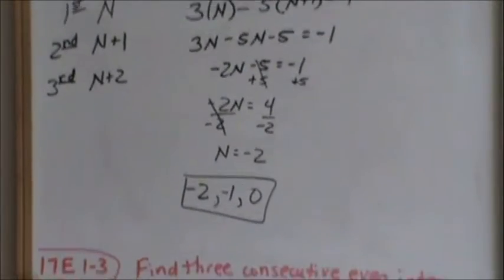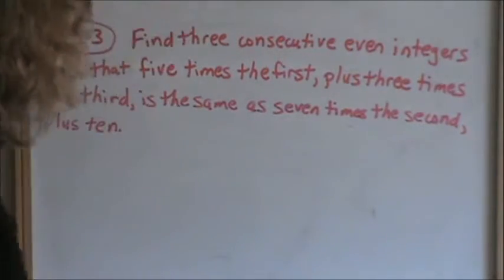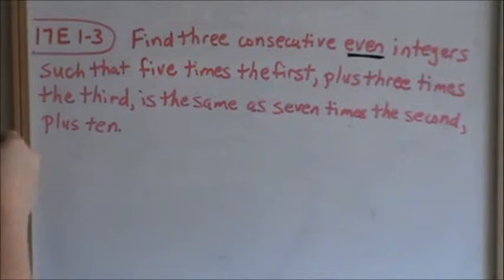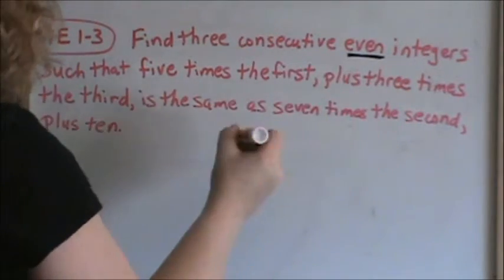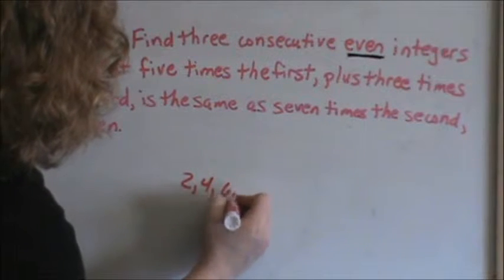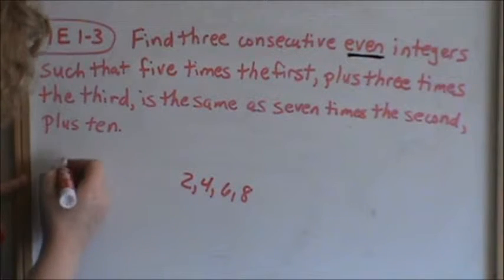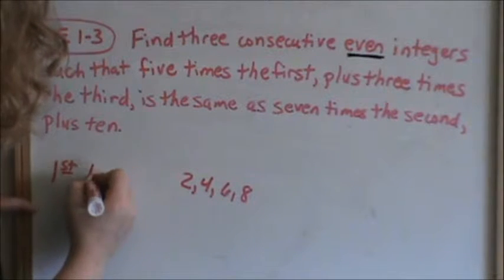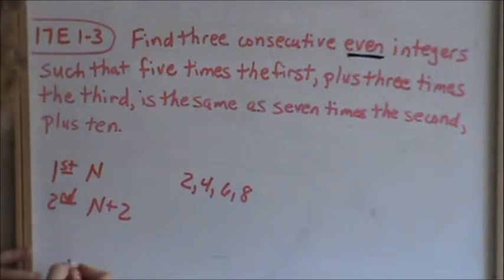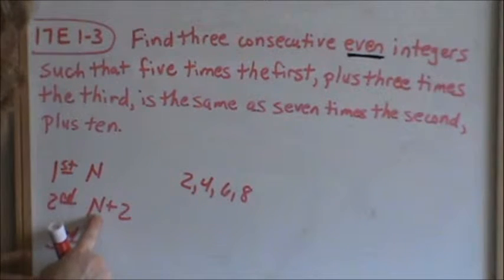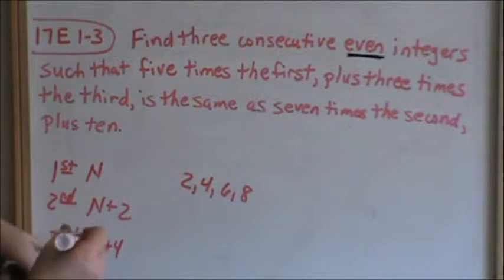Now let's look at 17E, problems 1 through 3. This problem says find three consecutive even integers — that word 'even' is a key word; I would circle or underline it. When you're counting consecutive even integers, you're skip counting by two: 2, 4, 6, 8. Those are consecutive even — I'm adding two every time. Since I want three consecutive even integers and I don't know my first one, I'll call it n. Since I want even integers, I add two every time: n, n plus two, and n plus four for my three integers.